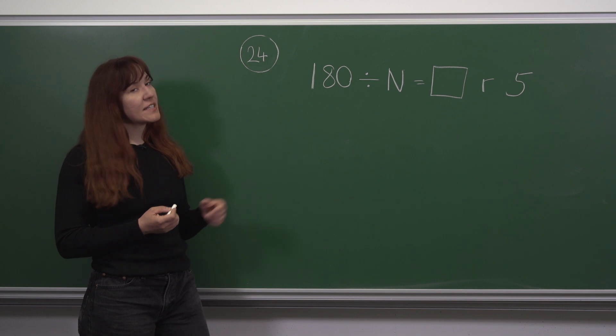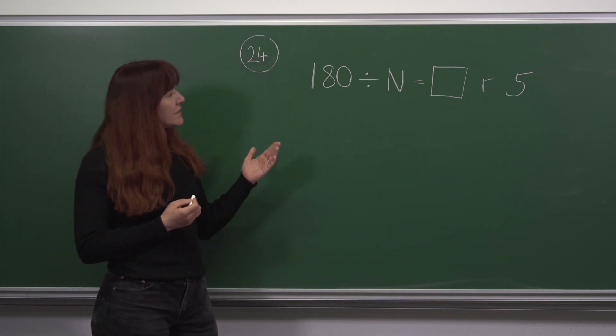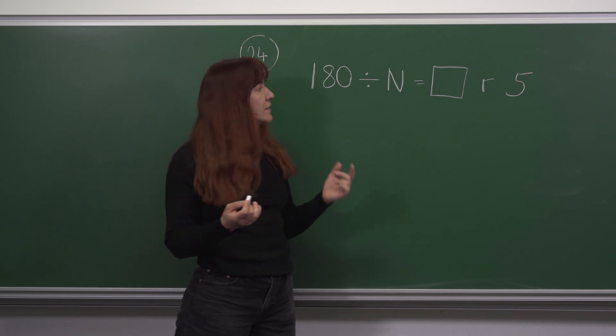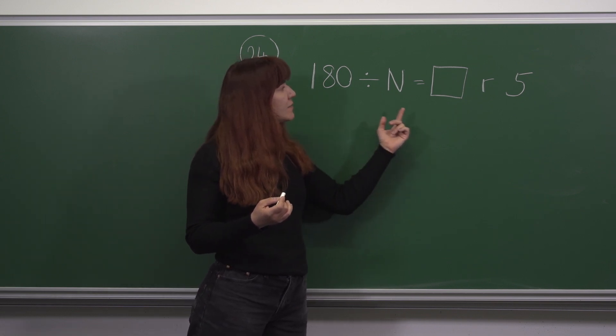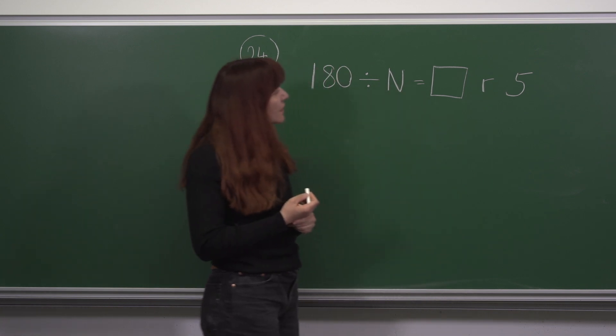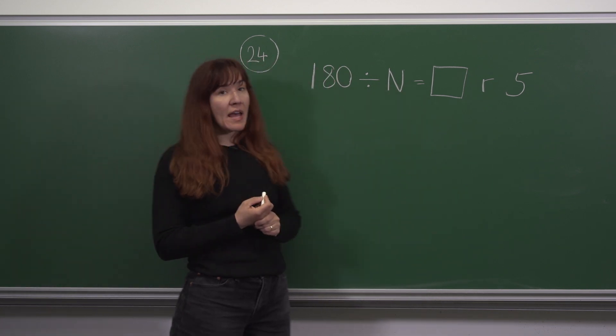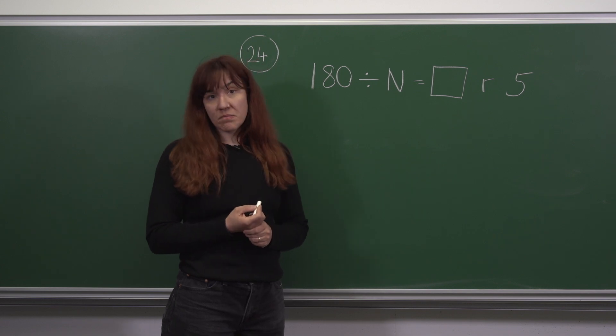We are told that 180 divided by some number n gives a remainder of 5. I've written it out in the standard form: 180 divided by n equals we don't know what, remainder 5. We are asked to find how many values of n could possibly give us this remainder.